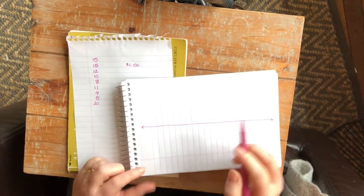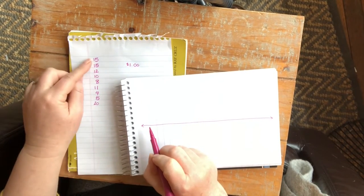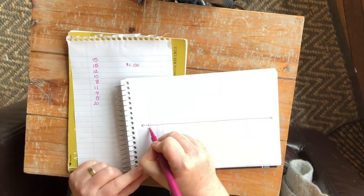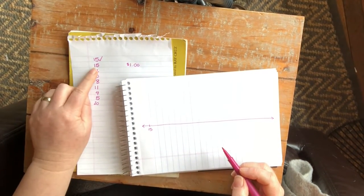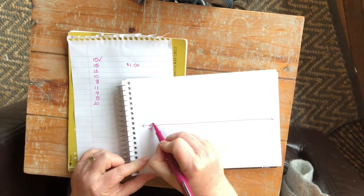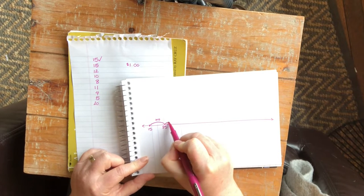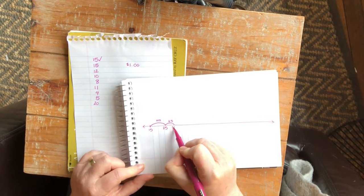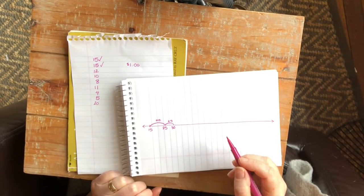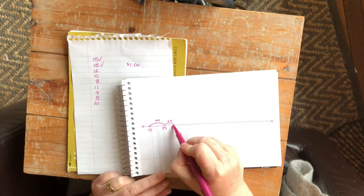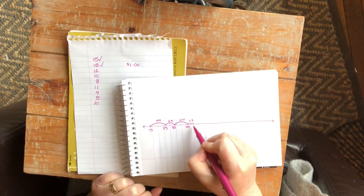I'm going to go straight down the list. When you're doing a number line, you can start at zero or with your first number — I'm going to start with 15. Now I need to add another 15 cents. I'll break that into a 10 and a 5: 15 plus 10 is 25, and 25 plus 5 is 30. Now I'm going to add on 12 cents — I'll break that into a 10 and a 2: 30 plus 10 is 40, and 40 plus 2 is 42.